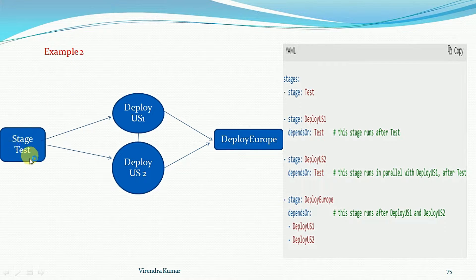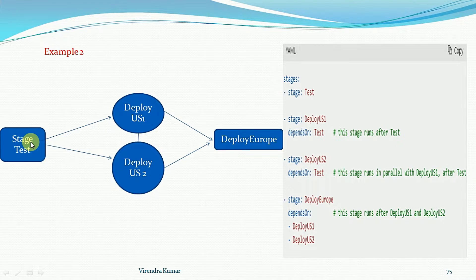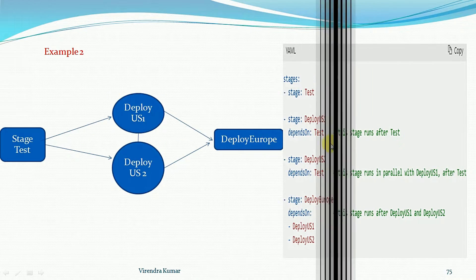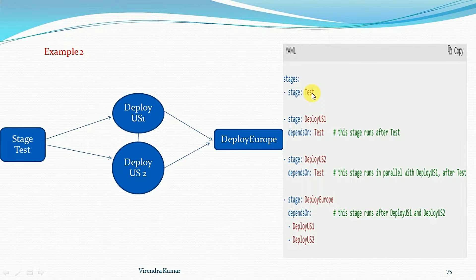Let me explain with an example of how we can run jobs parallelly. This is stage one, called the test stage. Stage two is deployment US1, stage three is deployment US3, and stage four is deploy Europe — just a demo pipeline. Stage one will execute first, then deploy US1 and deploy US2 will execute parallelly. After those two stages complete, deploy Europe will execute. So these two stages run in parallel after the test stage.